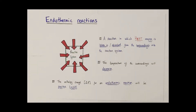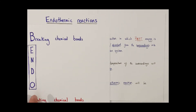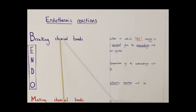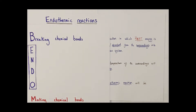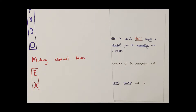We can summarise this with a handy mnemonic known as BENDOMEX. The first part, BENDO, means breaking chemical bonds is an endothermic process — breaking chemical bonds will always take in thermal energy. Whereas making chemical bonds is always an exothermic process — heat energy will always be given out when you form chemical bonds.